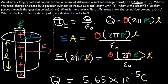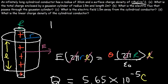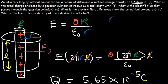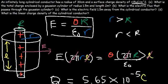So the electric field equals the surface charge density times the radius of the cylindrical conductor, divided by epsilon-naught times the radius of the Gaussian surface. Keep in mind little r is larger than big R in this problem. If little r is less than big R — inside the cylindrical conductor — the electric field is zero, as it is inside any metal conductor.